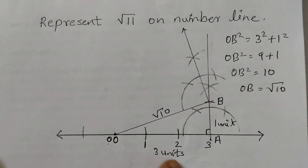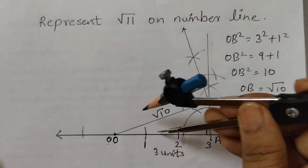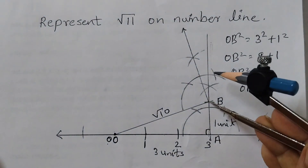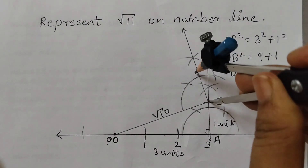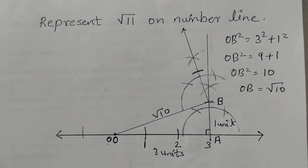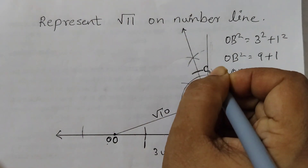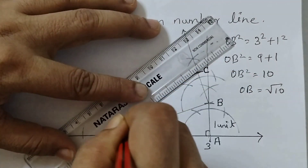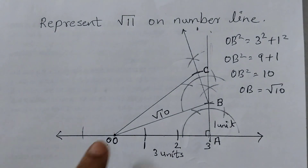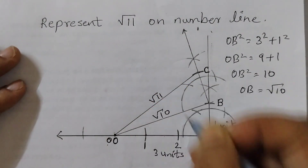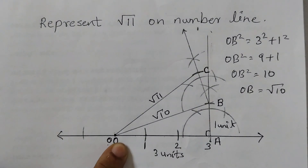Now take one unit length. Put the metal point at B and cut an arc on the perpendicular. This point is C. Now join O and C. This length OC is square root of 11.